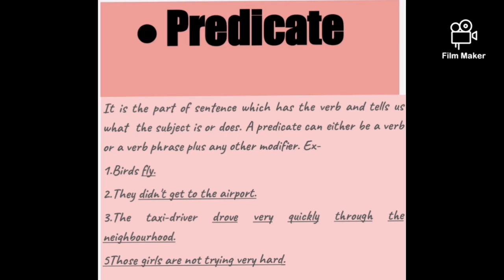What is a predicate? The rest part of the sentence is called the predicate. It is the part of the sentence which includes the verb, and it tells what the subject is or what it does. A predicate can be a single word or a verb phrase with other modifiers. For example: 'The bird sings' — bird is the subject and sings is the predicate, just one word, but the sentence is complete.